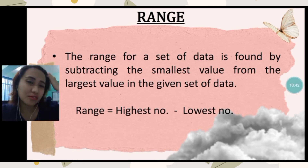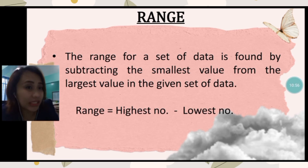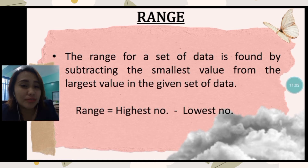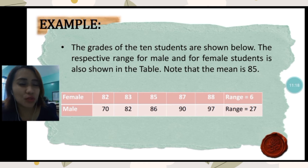The range is the simplest measure of dispersion. The range for a set of data is found by subtracting the smallest value from the largest value in the given data set — simply subtracting the highest number by the lowest number. For example, the grades of 10 students are shown below, with the respective range for male and female students. Note that the mean is 85.